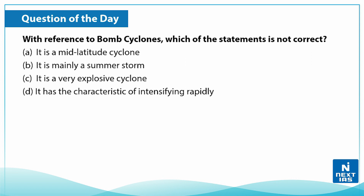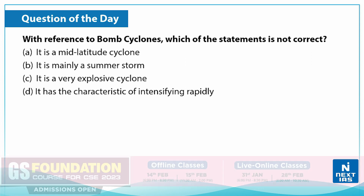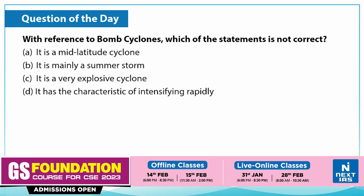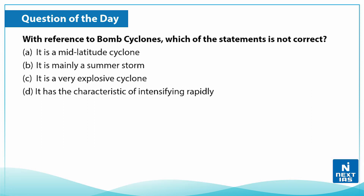Now let's take up a practice question on this topic. With reference to bomb cyclones, which of the following statements is not correct? A) It is a mid-latitude cyclone. B) It is mainly a summer storm. C) It is a very explosive cyclone. D) It has the characteristic of intensifying rapidly. You can write your answers in the comment section below — choose the statement which is not correct.